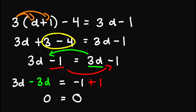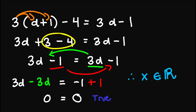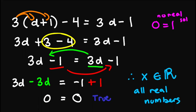Now what does this mean? Is it also no solution since we lost the variable? Well, that is not the case since 0 equals 0 is always true. So if this is the case, we conclude that x is an element of the real numbers, which means that x is satisfied by all real numbers. So take note: if we encounter something like 0 equals 1, that means no real solution. But if we encounter 0 equals 0 or 1 equals 1, that means x is valid for all real numbers.